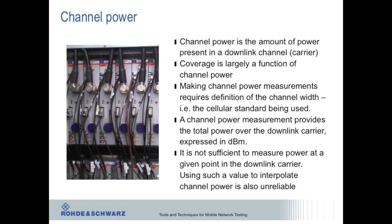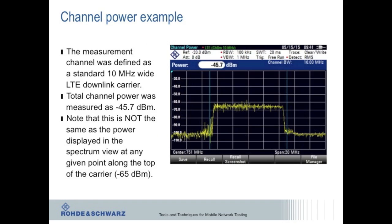Here we're looking at an LTE downlink signal, again 10 MHz wide. For channel power measurements, we manually define how wide the channel is — the bandwidth over which we're going to integrate the power. In this screenshot, the overall channel power is minus 45.7 dBm, which is different from the level measured at a particular single point — say, minus 65 dBm. A portable spectrum analyzer will normally have the ability to measure channel power directly and therefore give a much more accurate representation of the base station signal power.